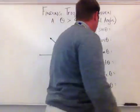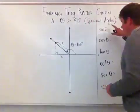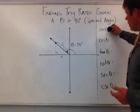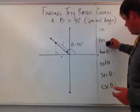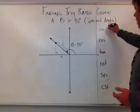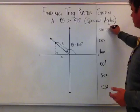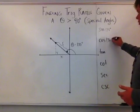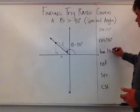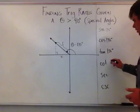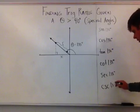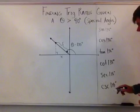I want to know what the sine of 135 degrees is, what the cosine of 135 degrees is, what the tangent of 135 degrees is, the cotangent of 135, the secant of 135 degrees, and the cosecant of 135 degrees.